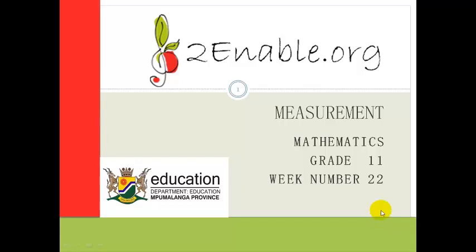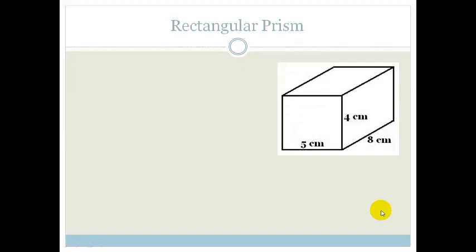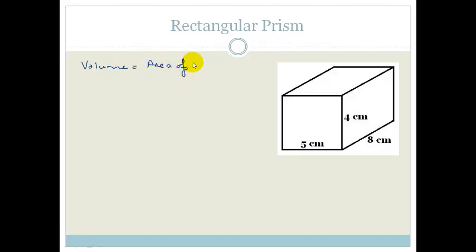Good day grade 11s. Welcome to this next lesson of week number 22. We're still looking at measurement and in this lesson we are revising volume. The volume of any type of prism or shape like this is very easy because its volume is always equal to the area of the base times the perpendicular height.